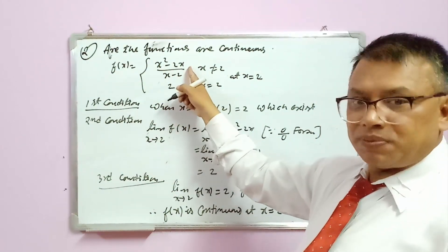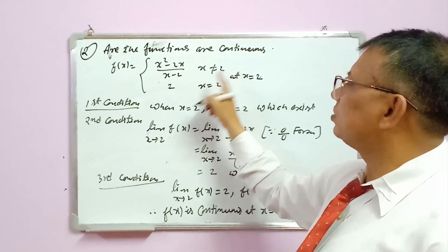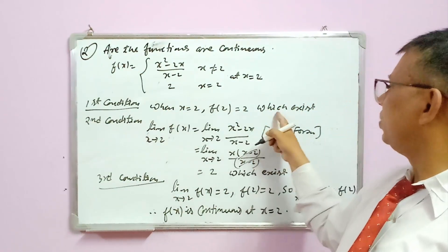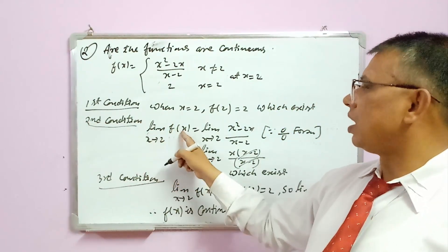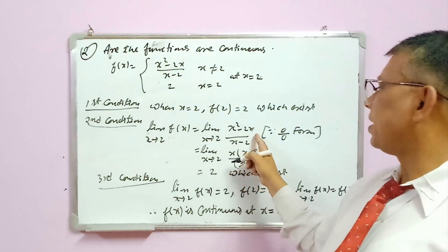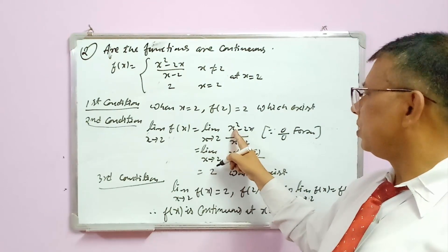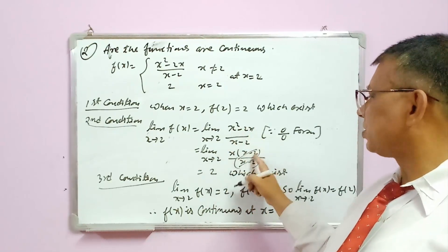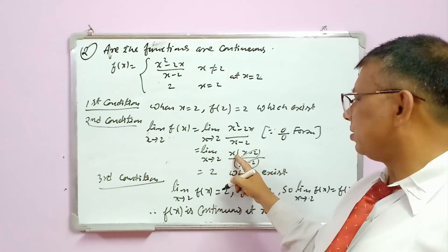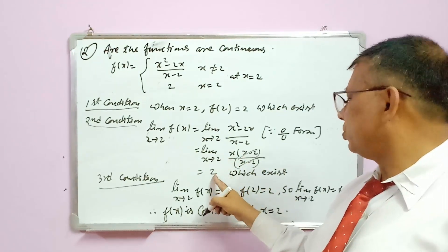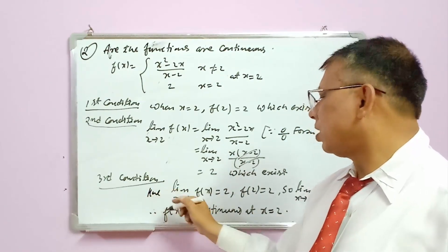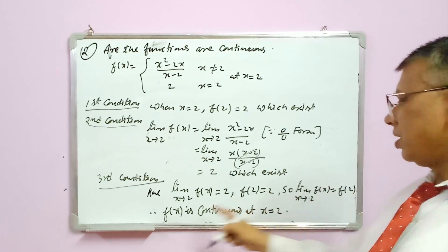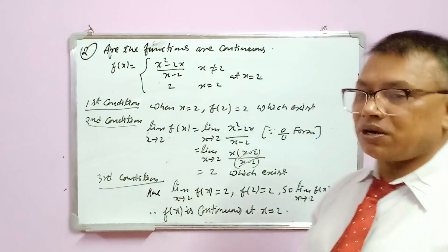Next: f(x) = (x² - 2x)/(x - 2) for x ≠ 2, and f(2) = 0, at x = 2. First condition: f(2) = 2, which exists. Second condition: limit as x tends to 2 of (x² - 2x)/(x - 2) — taking x common gives x(x - 2)/(x - 2) = x. Substituting x = 2 gives 2, which exists. Third condition: the limit equals f(2) = 2. Since all three conditions are satisfied, f(x) is continuous at x = 2.